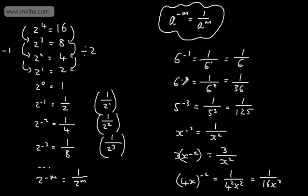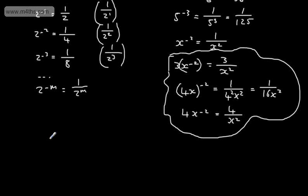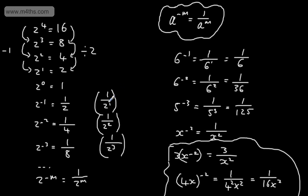For this particular standard, you will be expected to carry out basic calculations with numeric examples — the algebraic work is extension. Let's do a couple more: 3 to the power of minus 3 is 1 over 3 cubed. Since 3 cubed is 27, we have 1 over 27. In general, if we had p to the power of minus q, we write this as 1 over p to the power of positive q. To summarise: a to the power of minus m is 1 over a to the power of positive m.